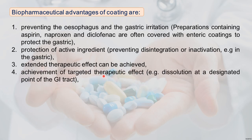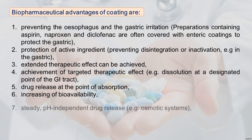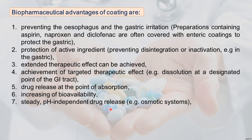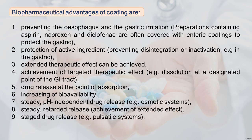Extended therapeutic effect can also be achieved through extended release dosage forms. We can target any portion of the GI tract to release the drug — dissolution at a designated point, drug release at the point of absorption, increasing bioavailability. pH-independent drug release can be achieved using osmotic systems. Release can also be retarded in extended release or pulsatile dosage forms.